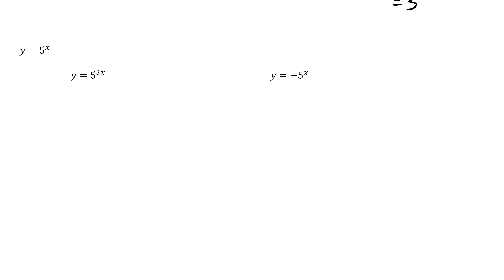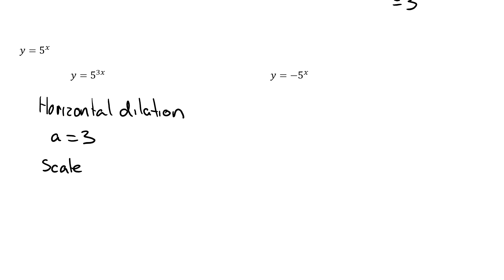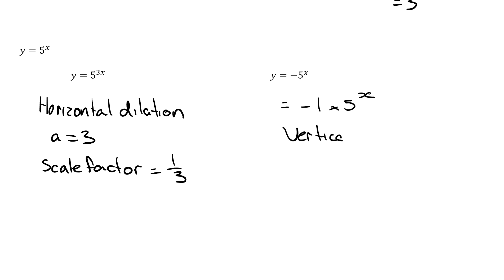In the third example, notice that the 3 is connected to the x, so it is a horizontal dilation where a equals 3 with a scale factor of 1 over 3. In the fourth example, we have a negative 1 multiplied by 5 to the power of x. Because the negative 1 is not connected to x, this is a vertical dilation where k equals negative 1.